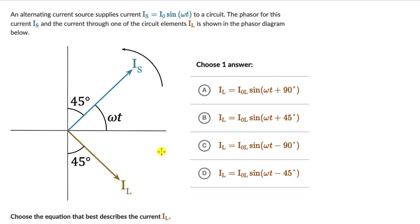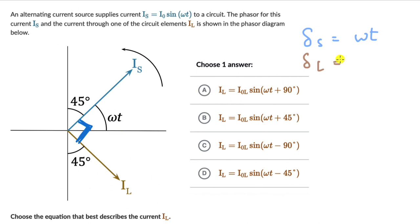Looking at this diagram, we see angles of 45 and 45, which means the angle between Is and Il — between these two vectors — is really 90 degrees. The phase for Is is just omega t. So the phase of circuit element L, delta L, should be either omega t plus pi by 2 or omega t minus pi by 2. We don't know if it's plus or minus yet, but we know it's plus or minus pi by 2 because the angle is 90 degrees. So the option could be either A or C.